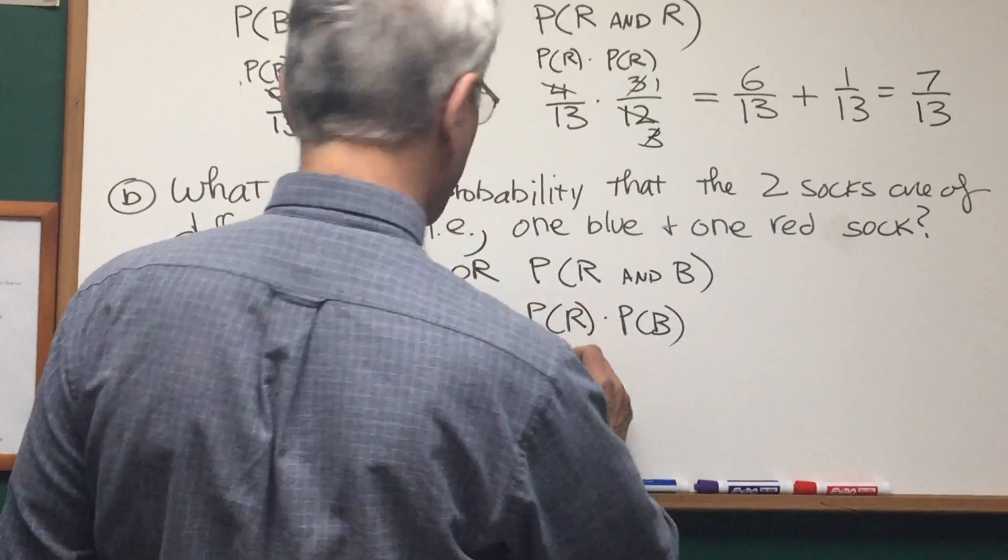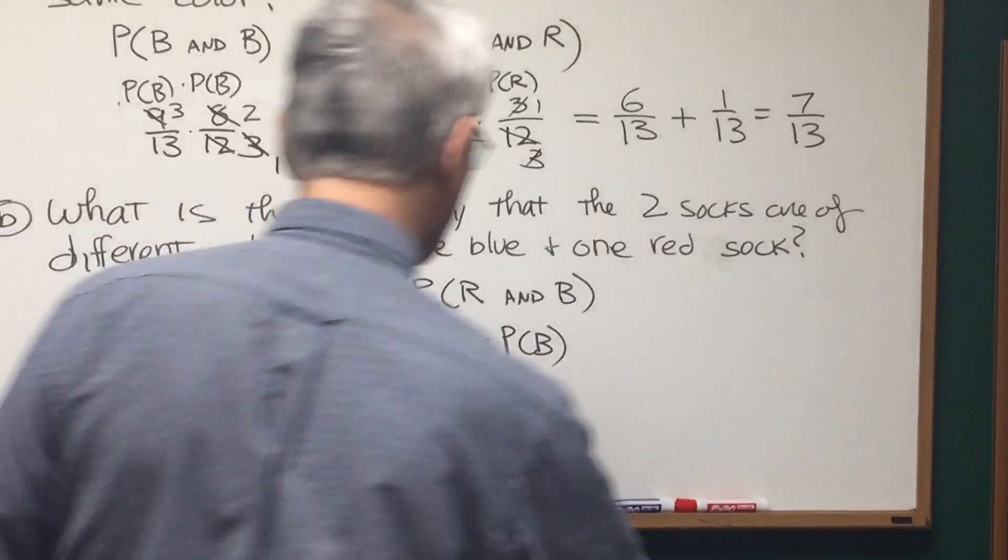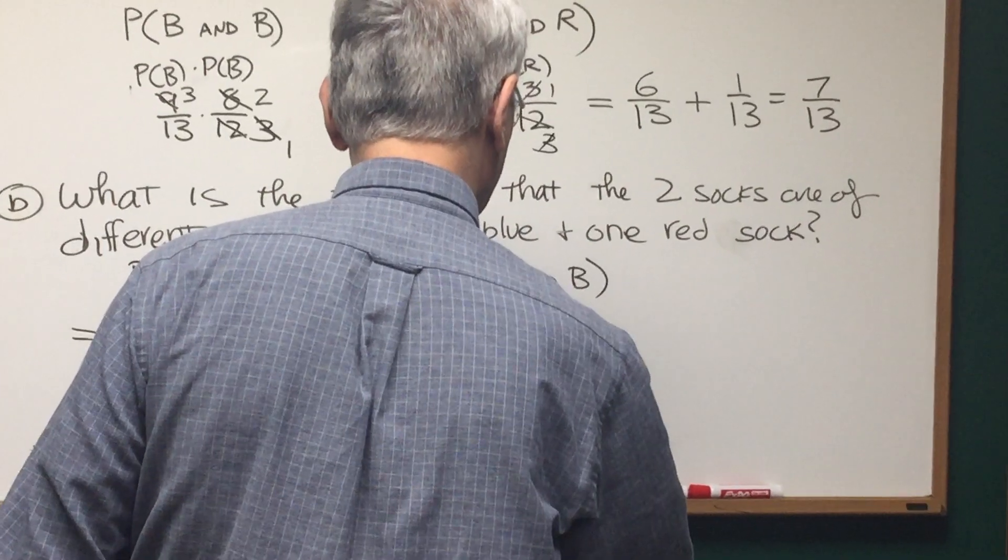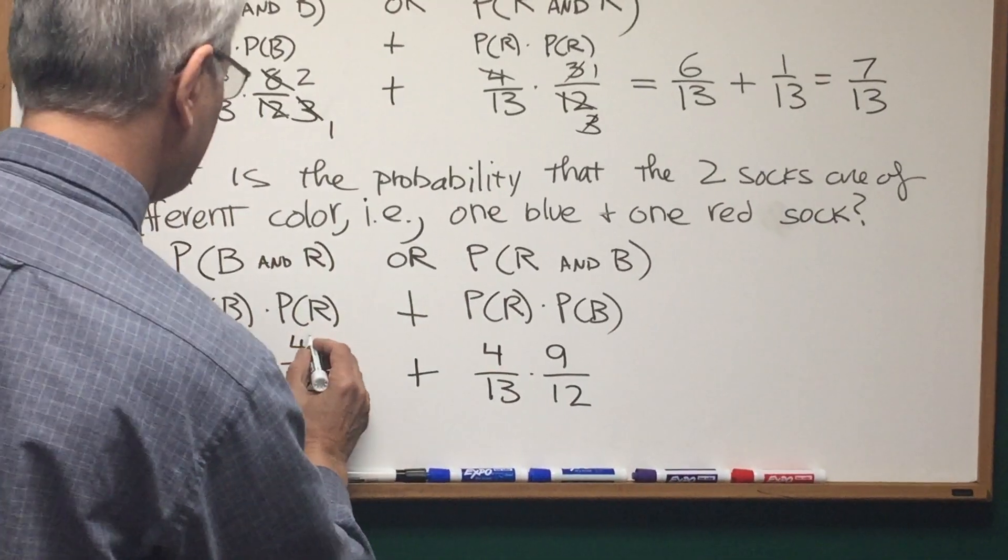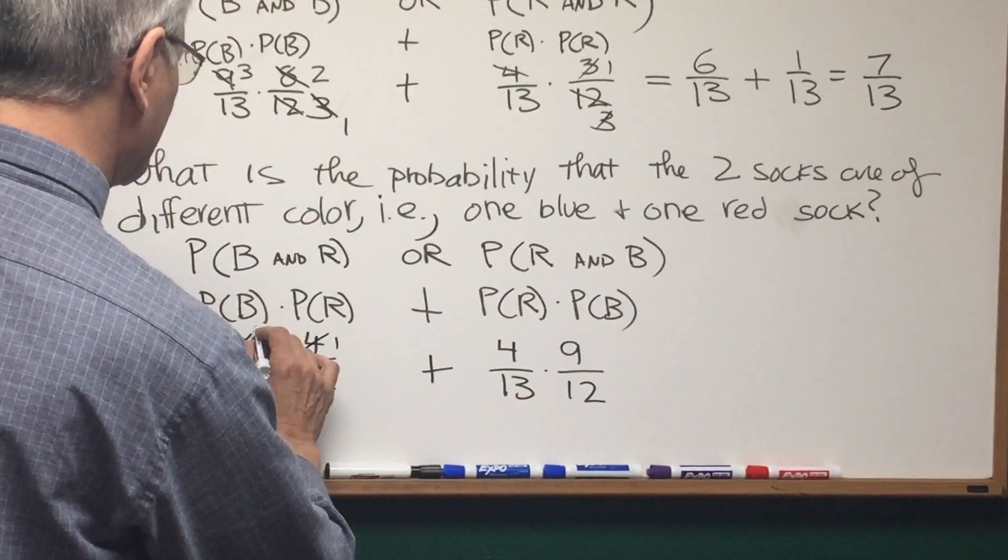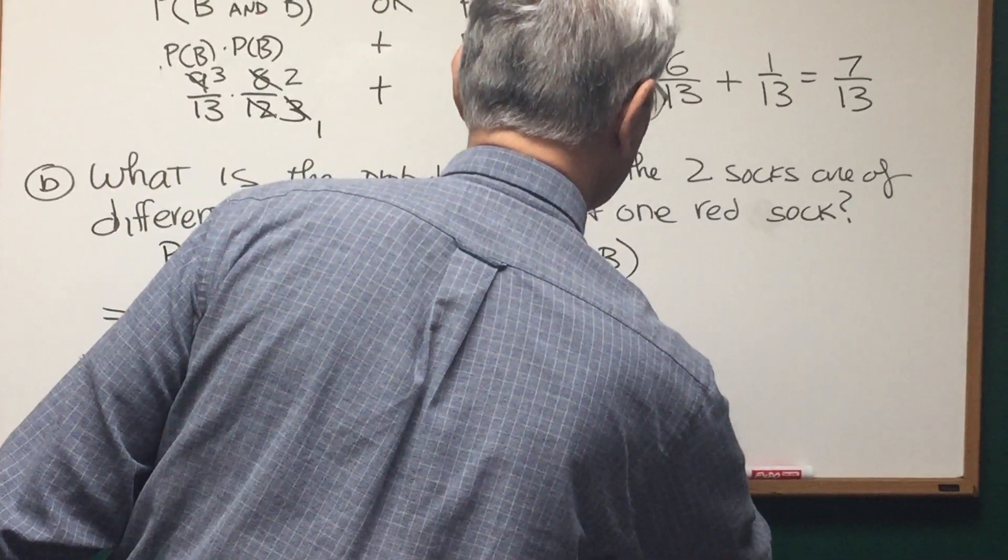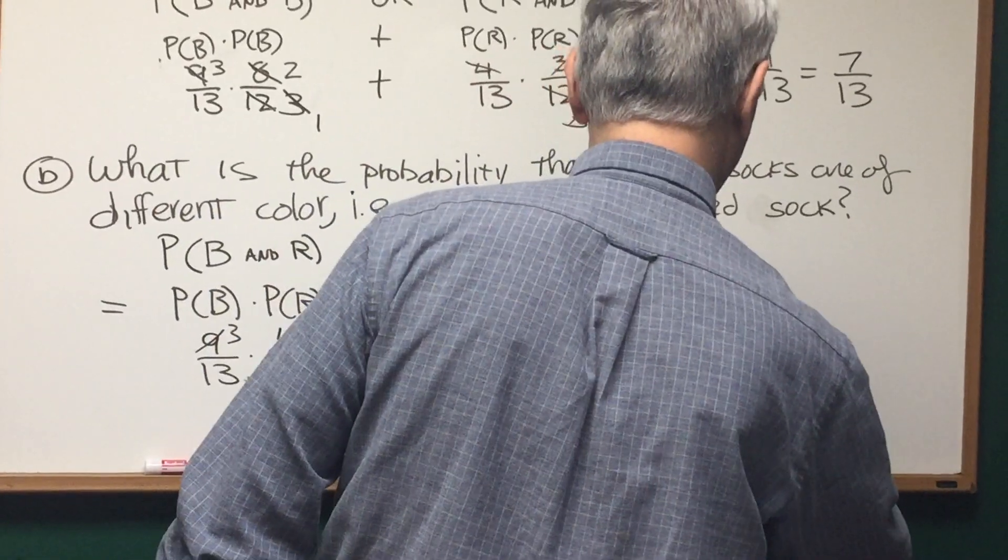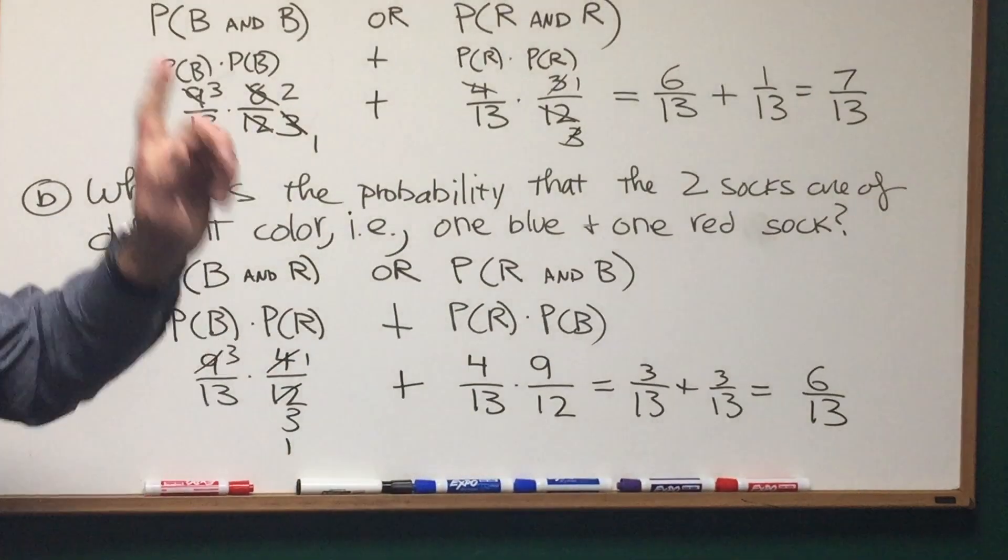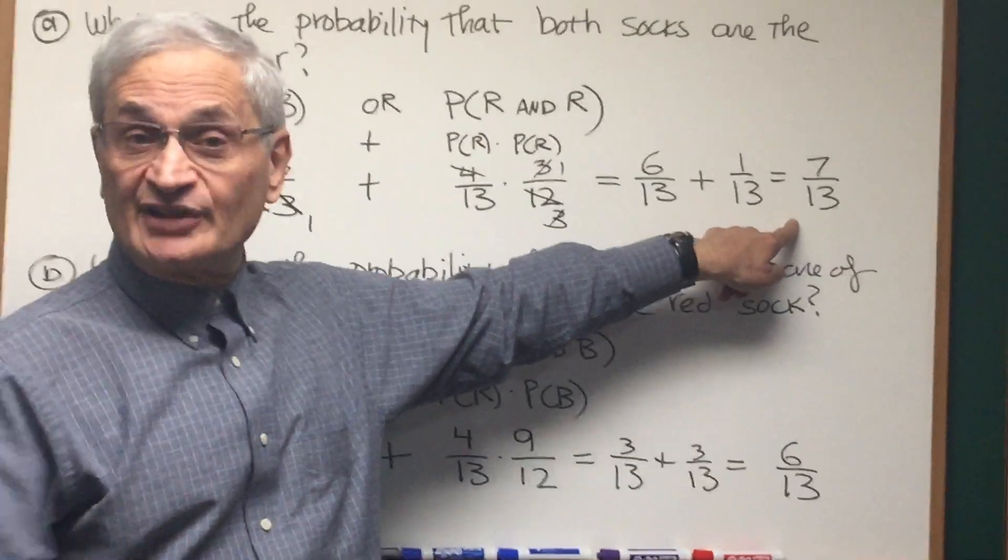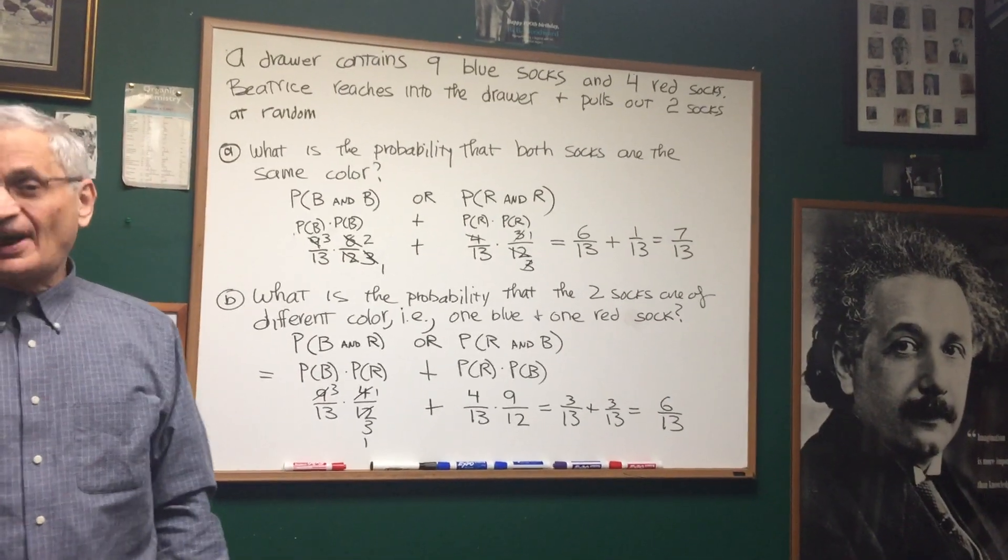Likewise over here, the probability of choosing a red first is 4 out of 13, and once that red sock is chosen, there are only 12 socks left in the drawer, but there are a total of 9 blue socks. Notice that these two fractions are equivalent, so let's compute them. 4 goes into 12, 3 times, 3 goes into 9, 3 times, so that's 3 thirteenths. The second fraction is also 3 thirteenths, so it's 3 thirteenths plus 3 thirteenths, and the answer is 6 thirteenths. And there's the answer to that. And I want you to notice that 6 thirteenths is the complement of 7 thirteenths. Add the two up, and you get 13 thirteenths. So that's how to solve those problems.